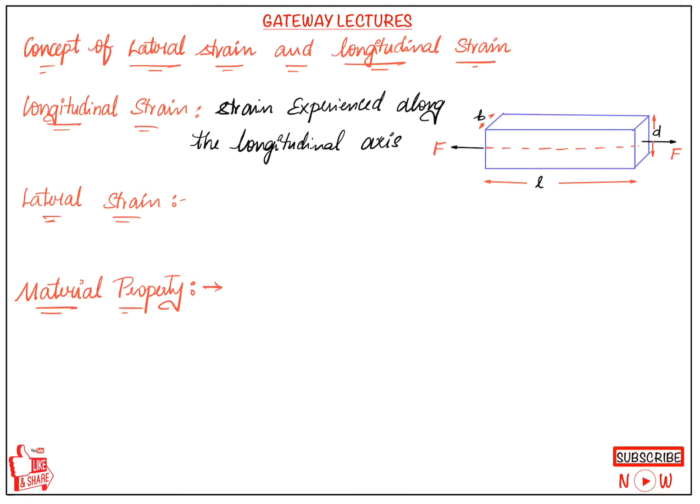Lateral is always perpendicular to longitudinal. Whatever dimension is perpendicular to longitudinal — here L is the length, D is the depth (a perpendicular dimension) and B is the breadth (also a perpendicular dimension). Strain experienced perpendicular to the longitudinal axis is called lateral strain.